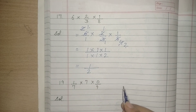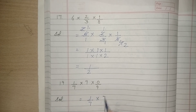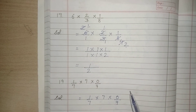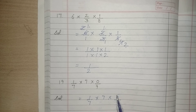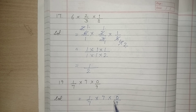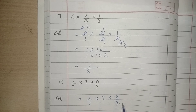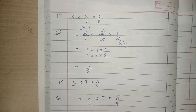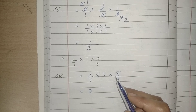See the next and last part: 1 upon 7 multiplied by 7 multiplied by 0 upon 9. Notice we are multiplying by 0 upon 9, which itself equals 0. Any number multiplied by 0 gives 0. So there is no need to cancel — the answer is simply 0. With this we have completed exercise 4.9. Thank you.